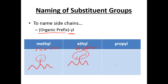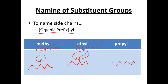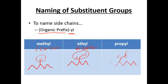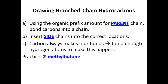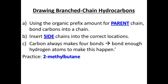And then finally, if we were to have three carbons — carbon, carbon, carbon — this would be known as a propyl group, with three carbons associated with it. So -yl is our ending for all of these substituent groups.